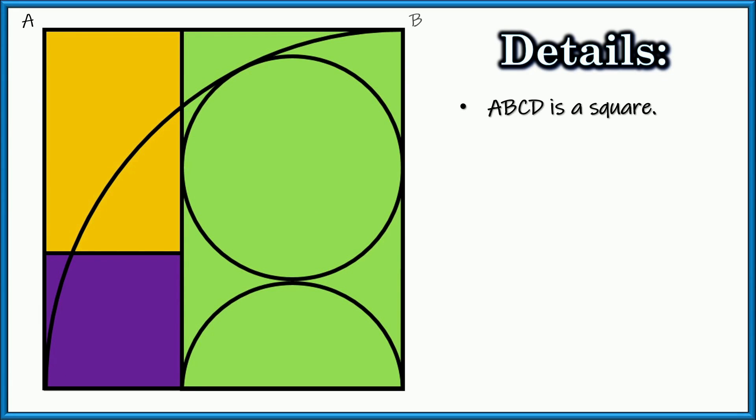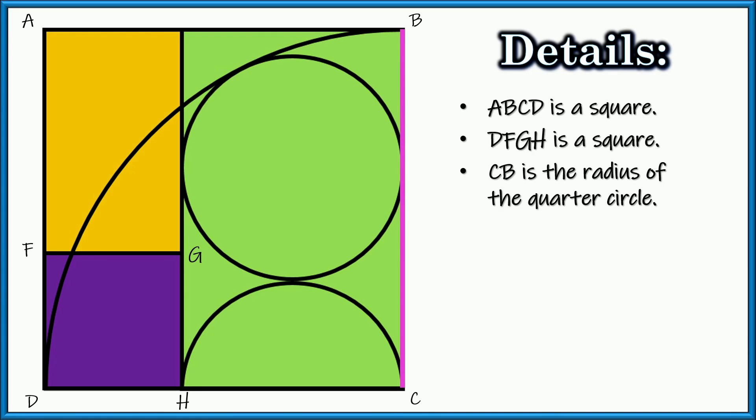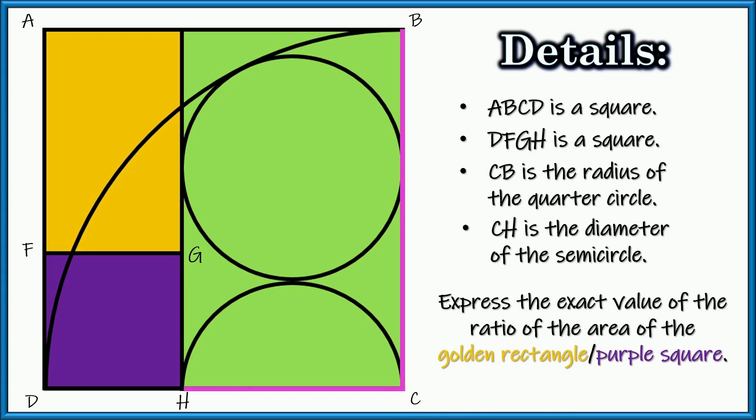The details are we have this big square ABCD, and we have a smaller square, the purple one over there, we call that DFGH. We have a quarter circle whose radius is CB, and we have a semicircle which has a diameter of CH. And our job is to find the exact value of the ratio of the golden rectangle divided by the purple square.